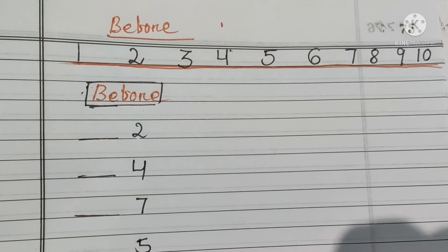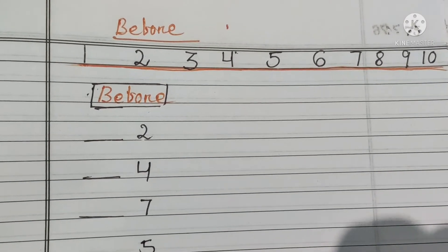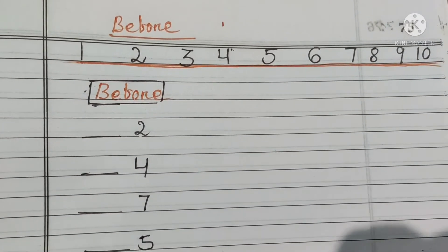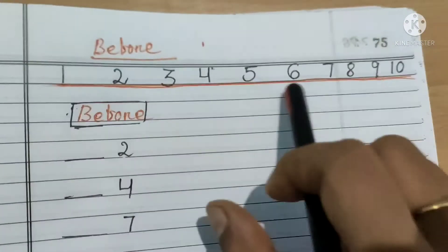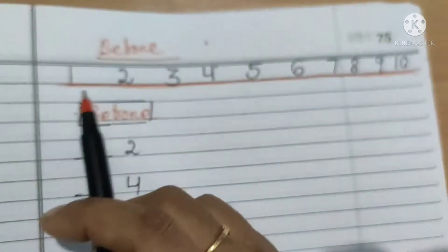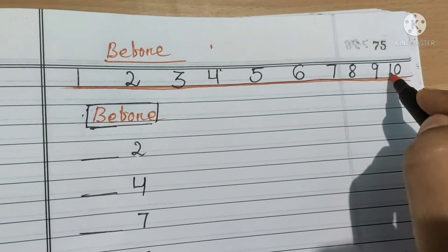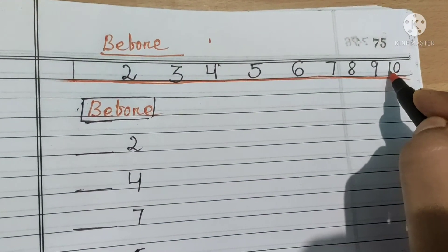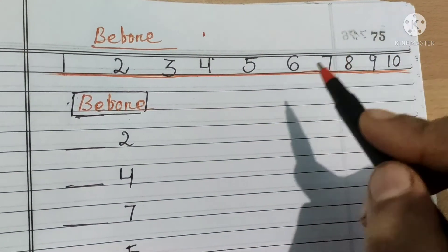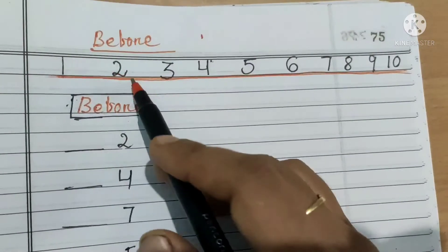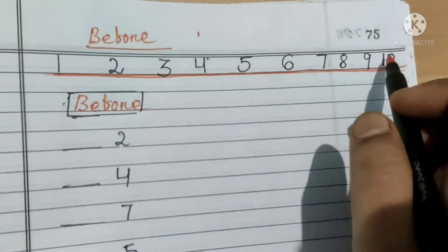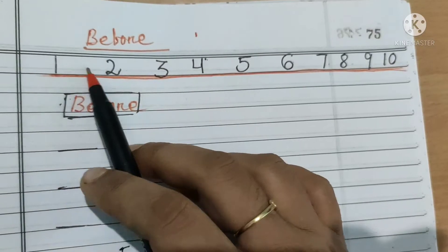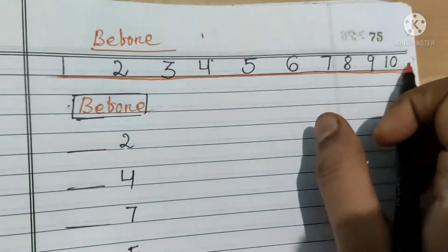Before number matlab pichhe wale number. So here I have written a number line with numbers 1 to 10. Aap aapke math copy mein 1, 2, 3, 4, 5, 6, 7, 8, 9, 10 aise karke number pahle likho ge.